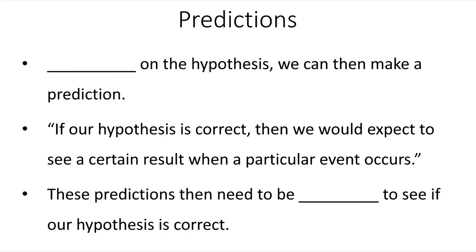How do we test a hypothesis? We need to make a prediction. Predictions are based on the hypothesis. If our hypothesis is correct, then we would expect to see a certain result when a particular event occurs. That's the typical format for a prediction, usually an if-then statement. These predictions then need to be tested to see if our hypothesis is correct.